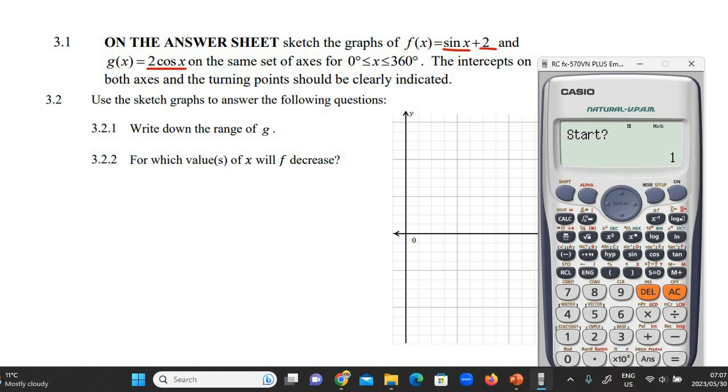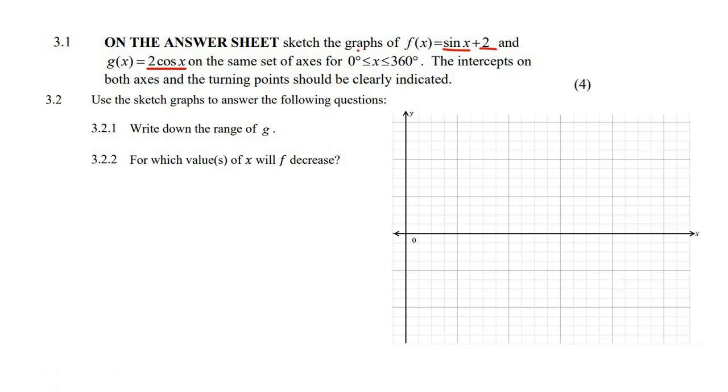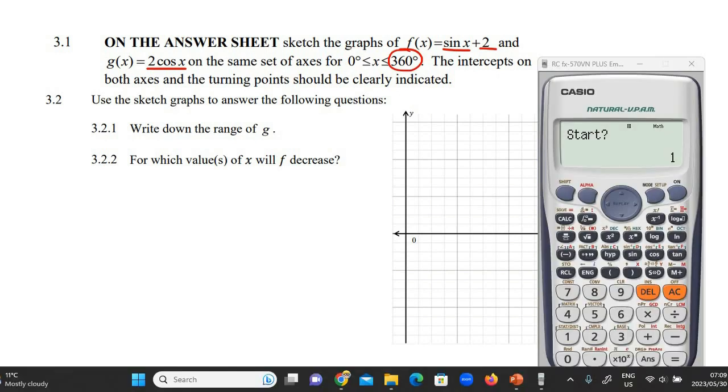Now your starting position is whatever this number is. Your ending position is whatever this number is. So for the start, we will say zero. For the ending position, we'll say 360. And then your step, well for a sin and cos graph in grade 10, we will use a step of 90. And so you press equals and there's all the values.